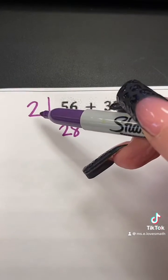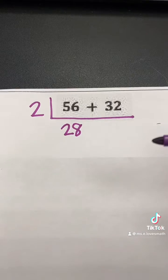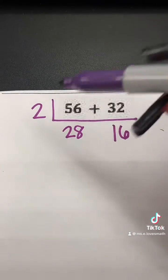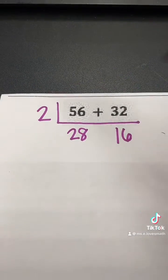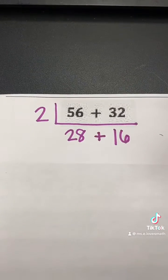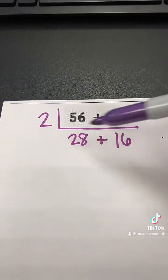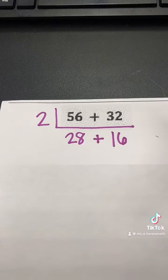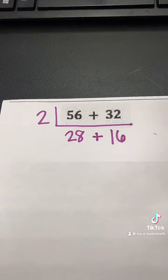56 divided by 2 is 28. 32 divided by 2 is 16. We're just going to bring our hitchhiker down with us. If you notice here, both of these numbers are even again, so I can use 2.